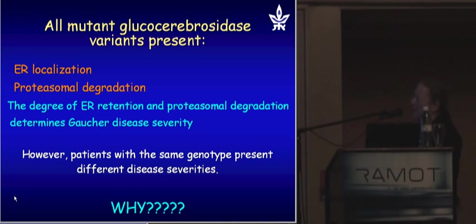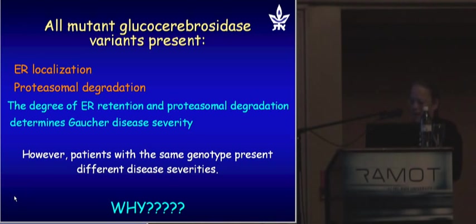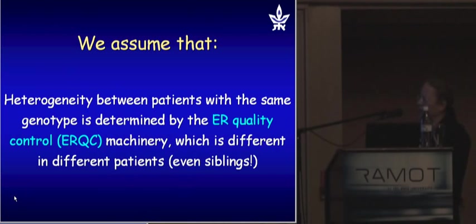What we've shown in recent years is that all mutant glucocerebrosidase variants show ER localization and proteasomal degradation, and the degree of ER retention and proteasomal degradation determines Gaucher disease severity. However, we still have patients with exactly the same mutation who present different Gaucher disease severity, which means mutation is the major cause but there are other factors that may affect severity. We assume that heterogeneity between patients with the same genotype is determined by the ERQC machinery, which differs between patients — even siblings — and is determined by polymorphisms, changes between us that are not mutations and don't cause disease but differ between individuals.